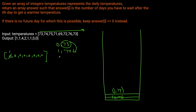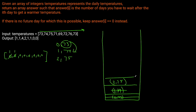Now we're at index two with value 75. Again, we check: is 75 greater than what we have at the top of the stack, which is 74? It is. So we pop from the stack and calculate the difference in days. 75 occurred at day two, and 74 was at day one — that's a one day difference to find that higher temperature. So the result at index one becomes one. Again, we now need to find a higher temperature for 75, so we add it to our stack and continue.